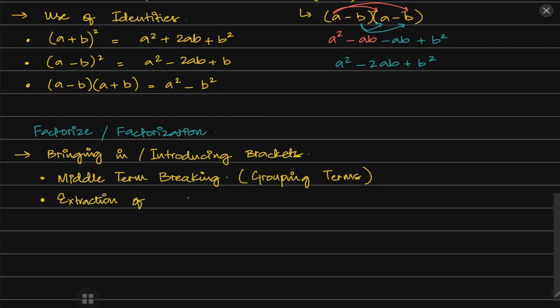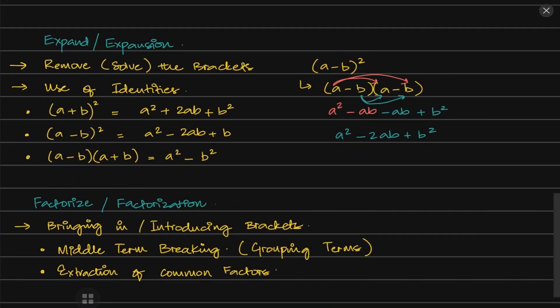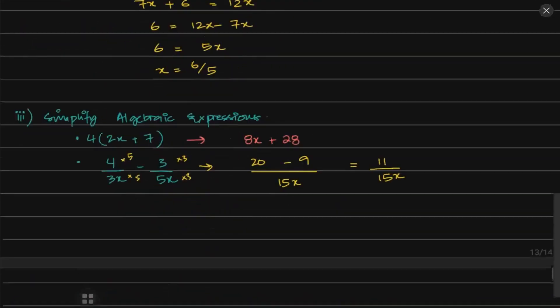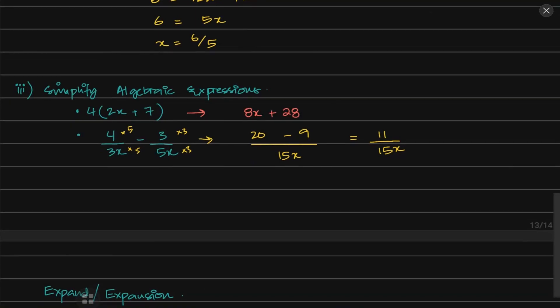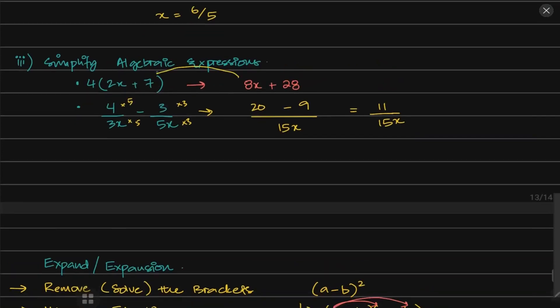We got the extraction of your common factors. Remember we talked about how you simplify your questions in the earlier part? Simplifying algebraic expressions. In this case we were expanding them. Now extraction of common factors is basically just the opposite of this. This is from going from this part to this part.